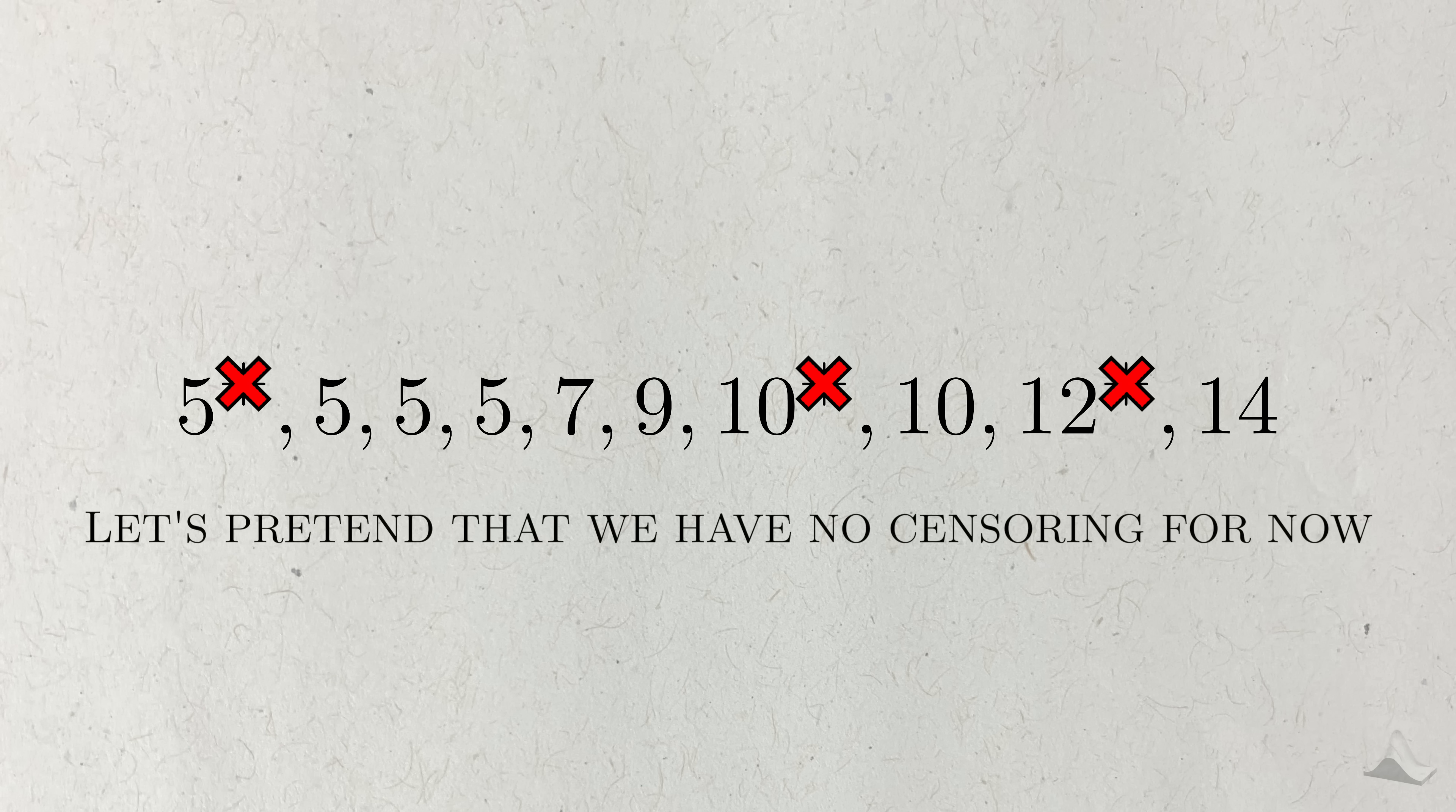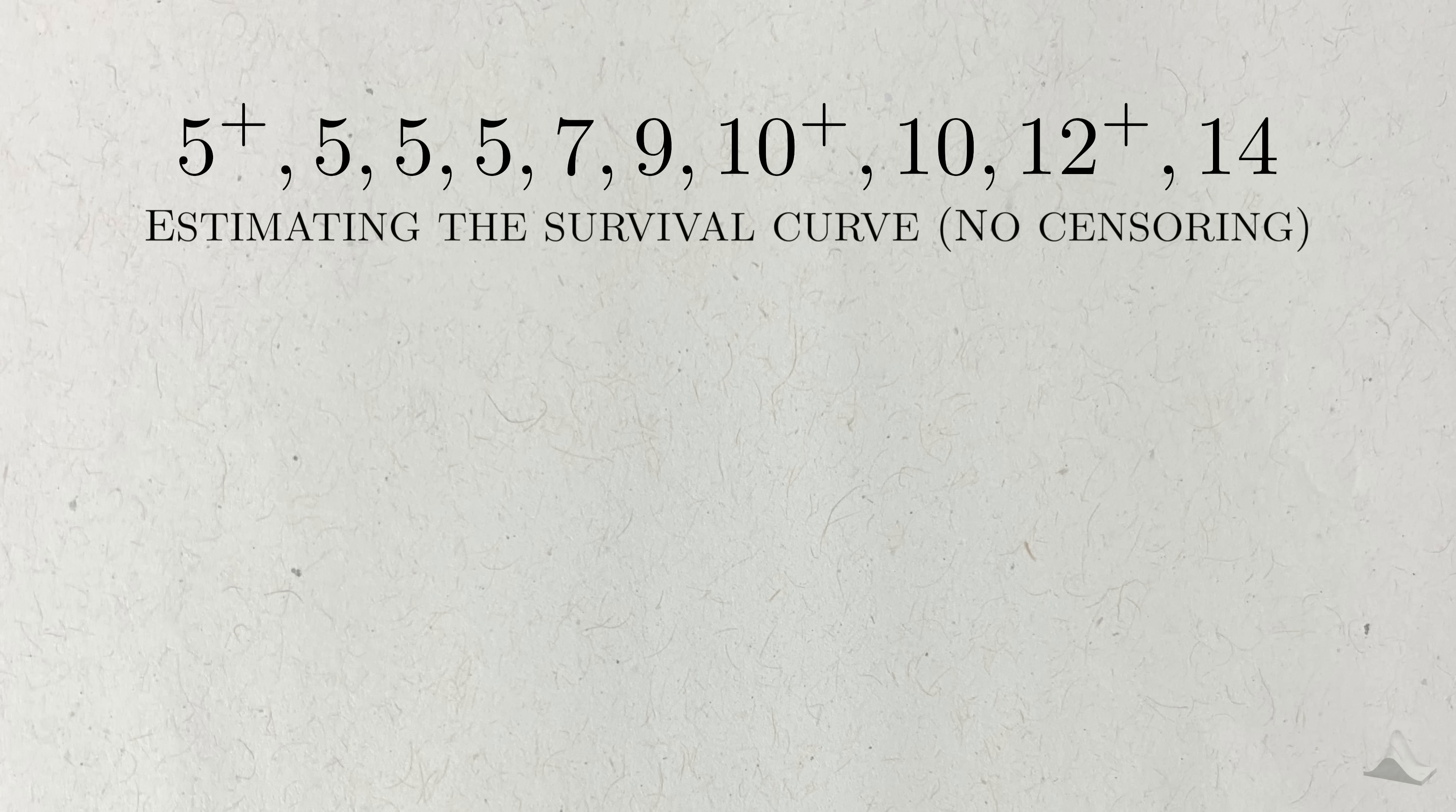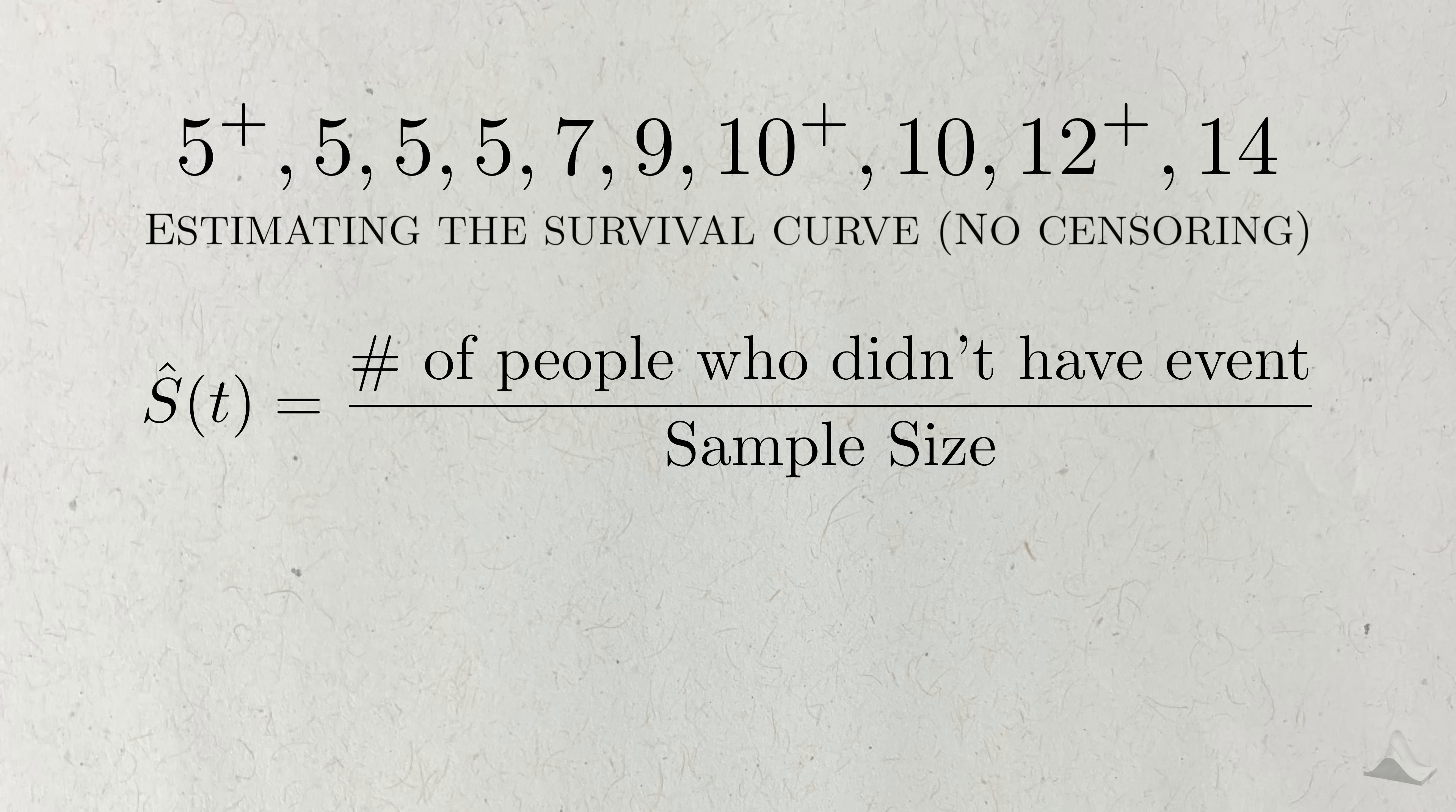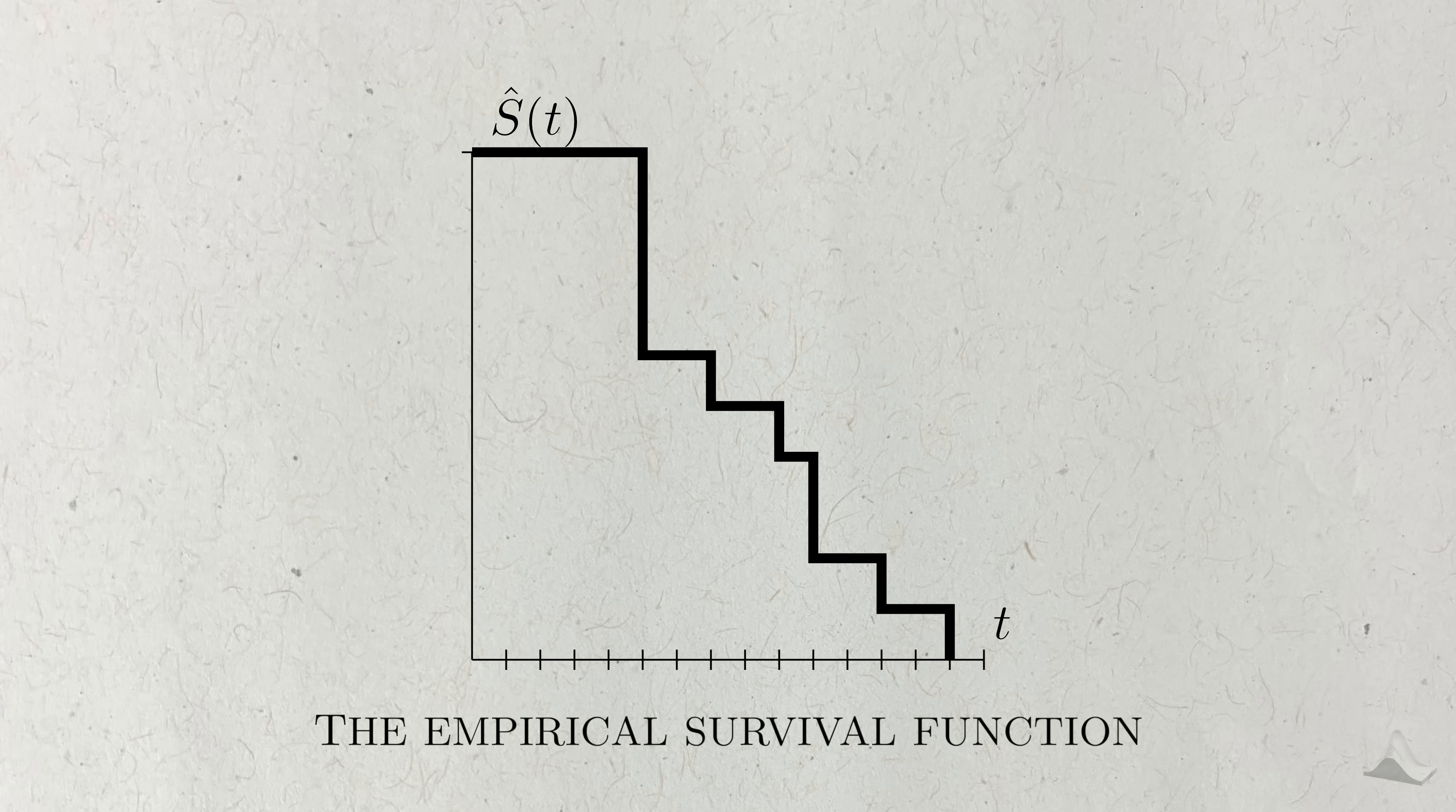For now, let's pretend we live in a statistical fantasy world where there is no censoring. In this case, it's very easy to estimate the survival function. For each time point where an event happens, you just need to calculate the proportion of people who still haven't experienced the event. This particular function is called the empirical survival function, where empirical refers to the fact that it's based on observed data. Since the empirical survival function only changes when an event happens, it takes on this characteristic stair-like appearance.